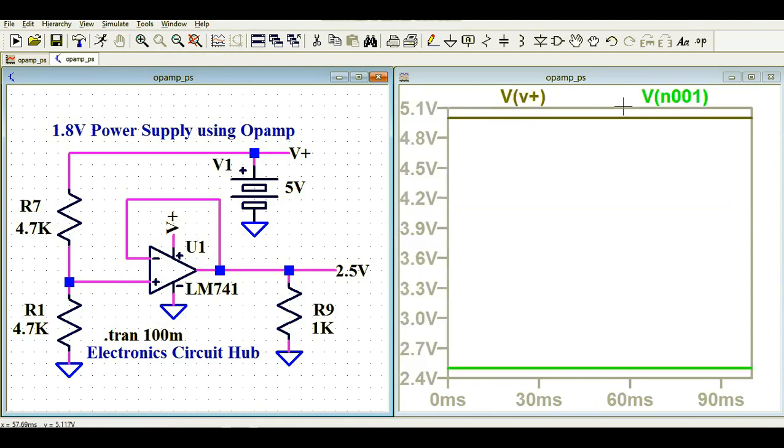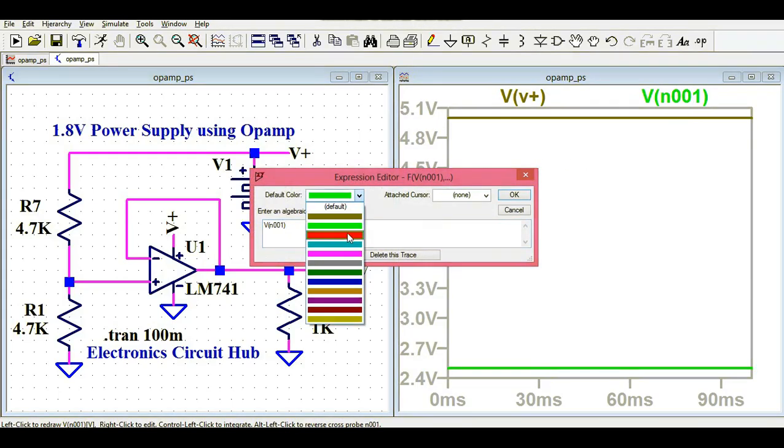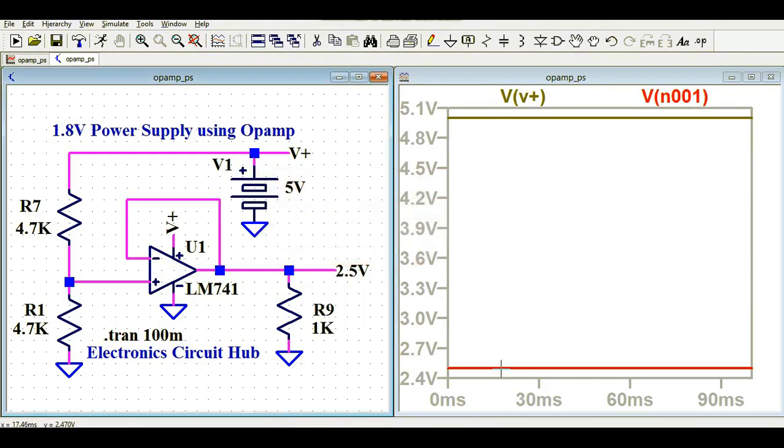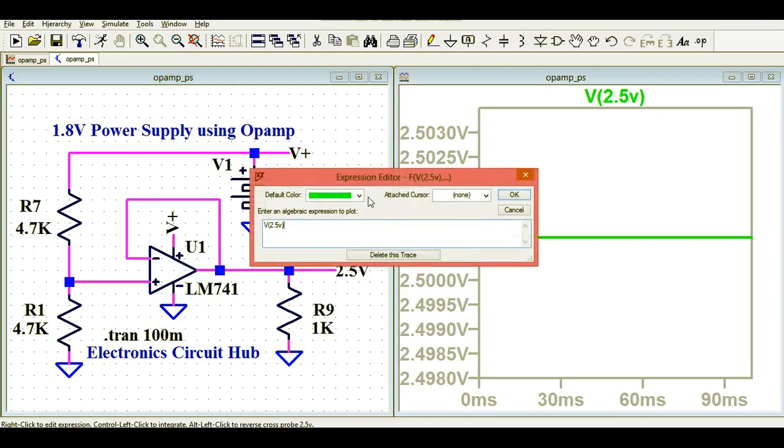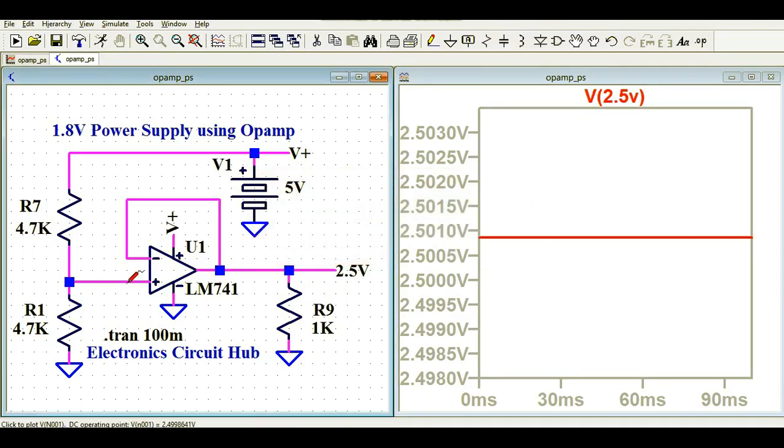Let me check what is my output. V plus is 5 volt, and the voltage I'm getting here is 2.5 volt. If you look at the green color, I'm changing the color right now. This is 2.5 volt. And what is my output? If I click on the output, I'm getting 2.5 volt, which is the same as your input with isolated output.